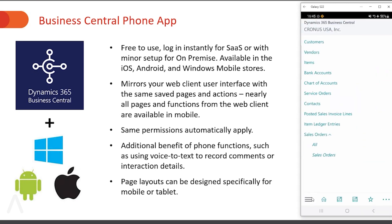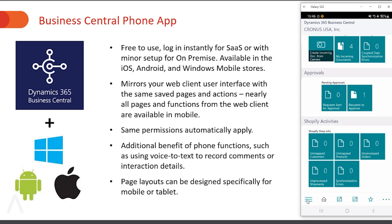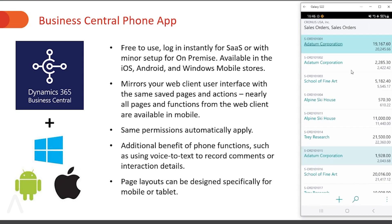Some other common ways users use this: if you're out visiting a customer and want to register that interaction, you can open this up and do that directly from your phone. You can also use your speech-to-text feature, so instead of typing lots of notes on your keyboard you can use those same phone features right from within here. Another way is the ability to create sales orders — if you're on a shop floor or warehouse, you can create a new order, add items as you're talking with the customer, and it will automatically upload back to Business Central so you can finish processing when you get back to your office.